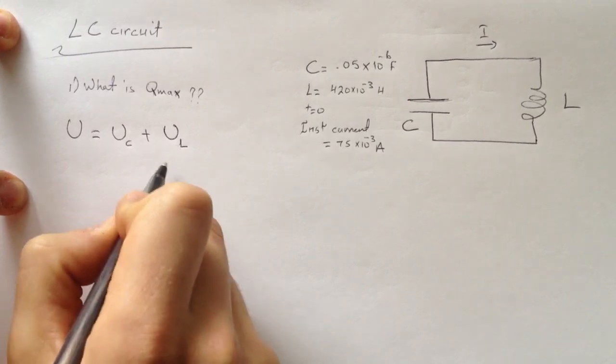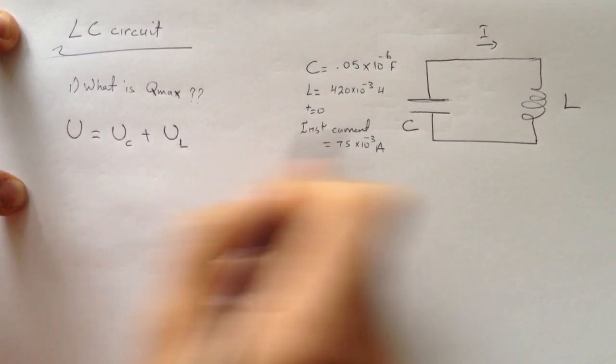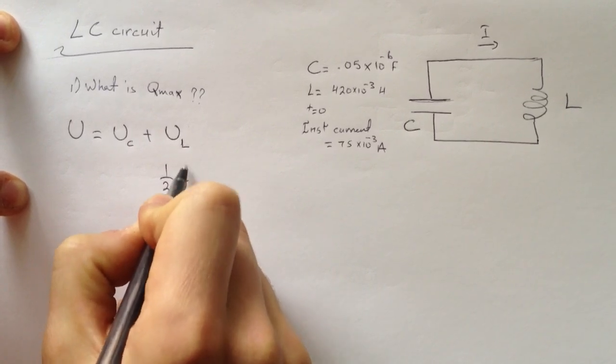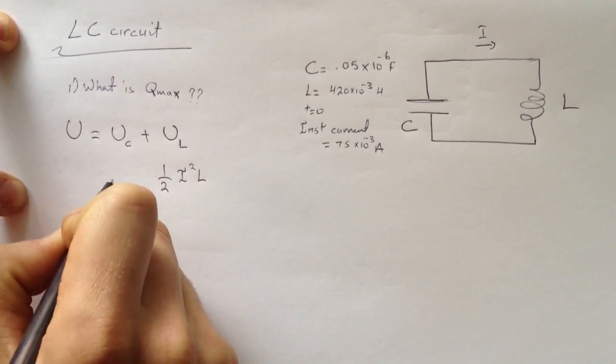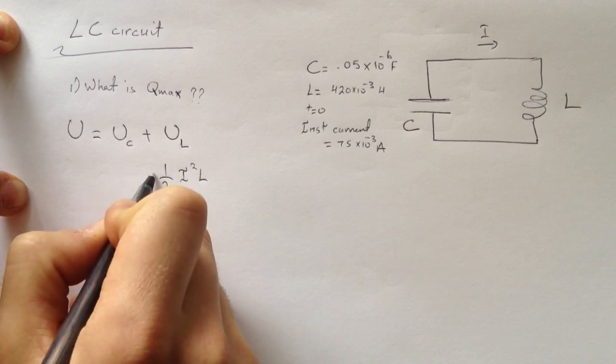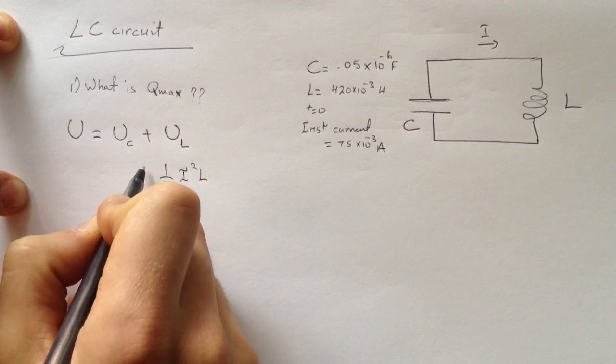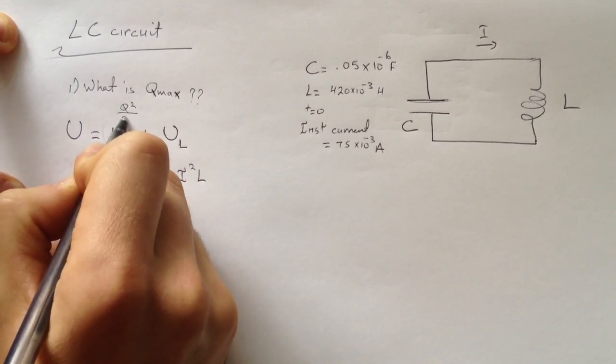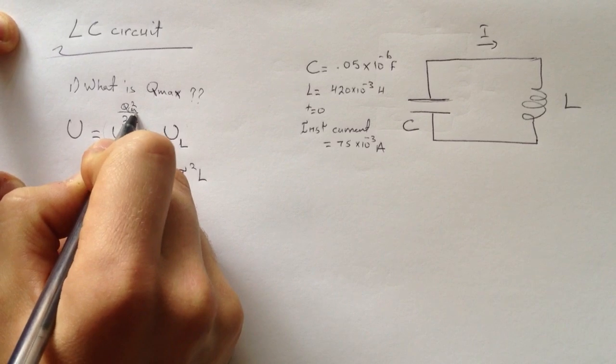We have this one, the potential energy of the inductor, which is half I squared L. Then we can just multiply it by two. This one is like Q squared over 2C at that time QT.